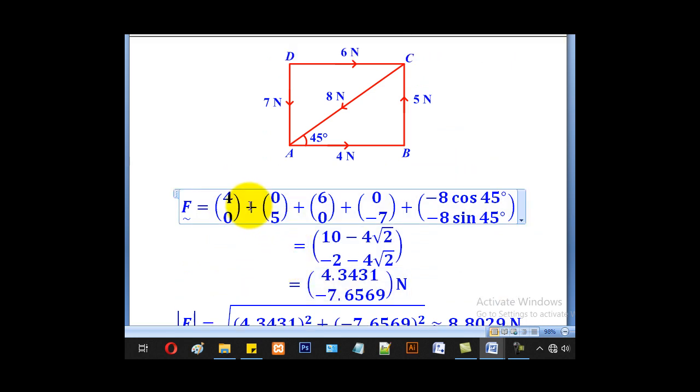The next step is to convert them to vector form. 4 is entirely horizontal, so in vector form it will be (4, 0). 5 is entirely vertical, so (0, 5). 6 is entirely horizontal, so (6, 0). 7 is entirely vertical but downwards, so (0, -7). 8 is at an angle of 45°. Horizontally, it is -8 cos 45°, and vertically -8 sin 45°.